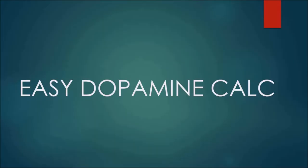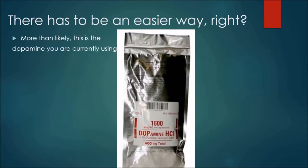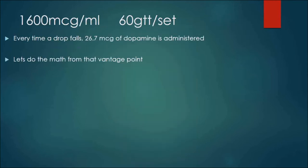Dopamine calculation for the people who are struggling with it, whether you're in school or you're just a bit rusty. This is an easier way you can do this. More than likely, this is the dopamine you're currently using. It's 1600 micrograms for every ml of fluid inside of it. This is probably one of the cheapest brands and it's in almost every Pyxis and every Omnicell across the country. So this is more than likely what you're going to be using. It's probably the most common dopamine suspension that we see.